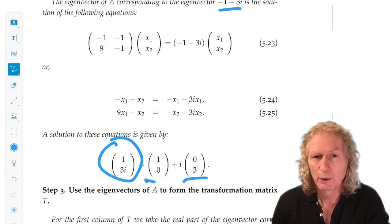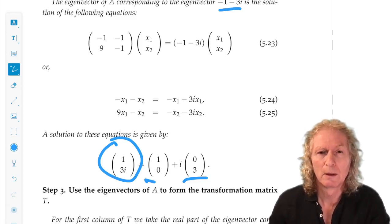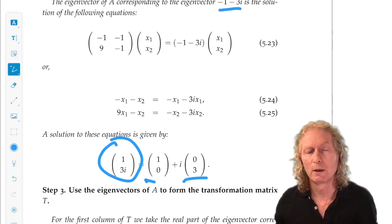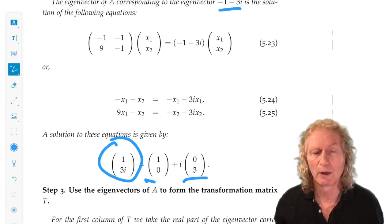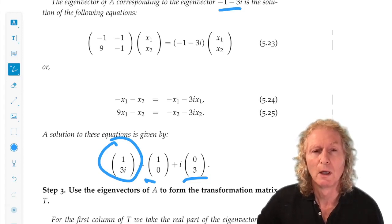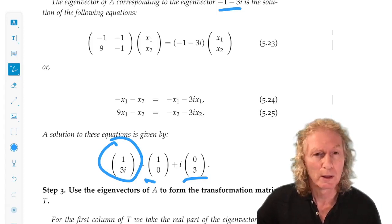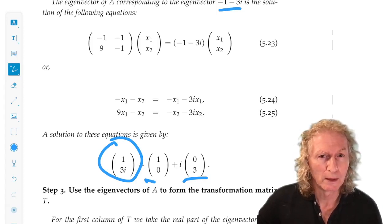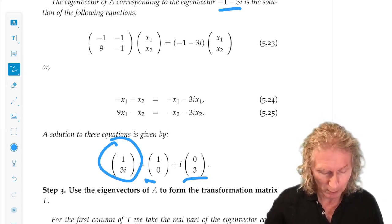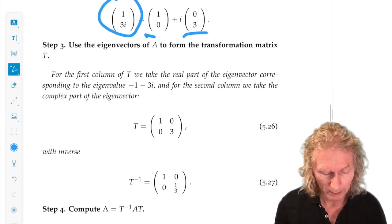Now's the tricky part that comes in. What do we do? What we're going to do to make the 2 by 2 transformation matrix T is, in one column, we're going to take the real part of this eigenvector, and in the other column, we'll take the imaginary part, like this.